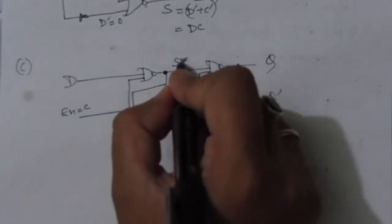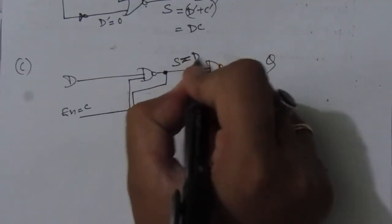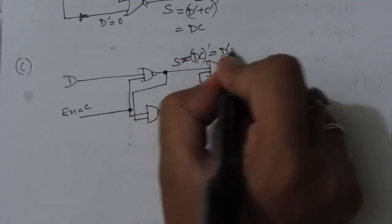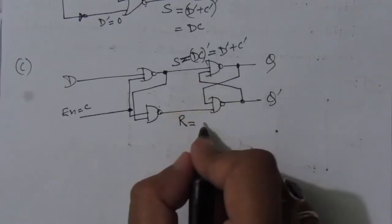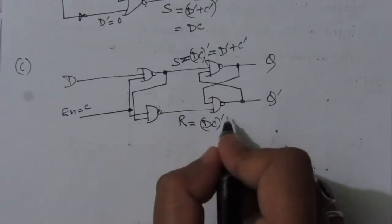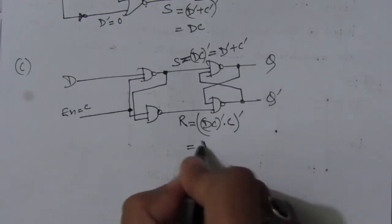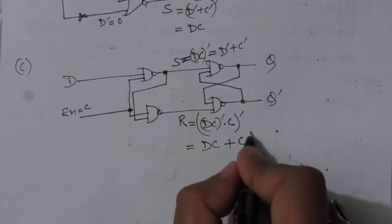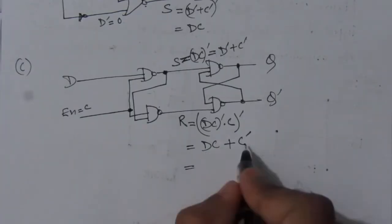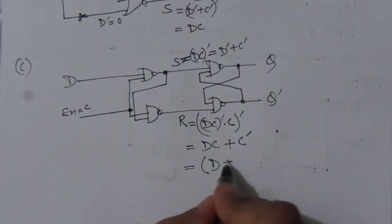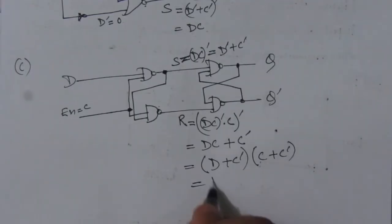Let us write the expressions for this circuit. We have D and C as inputs to the upper NAND gate, giving S = (D·C)-complement = D-bar + C-bar by De Morgan's theorem. R equals (D·C)-complement·C, all complemented because it is a NAND gate. Expanding: R = D·C + C-bar, which by the form a + bc = (a+b)(a+c) simplifies to (D + C-bar)·(C + C-bar) = D + C-bar.